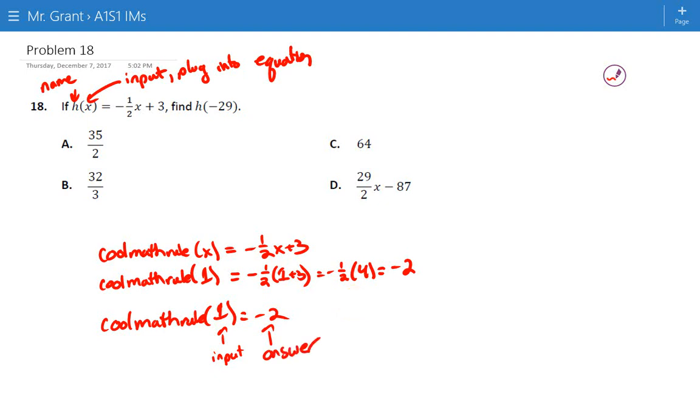Now of course they weren't as cool as I was so they didn't call their rule CoolMathRule, they called their rule H. And it says H of x equals negative one-half x plus three, find H of negative 29. So when we plug negative 29 into our formula or into our rule H, what is our answer going to be?